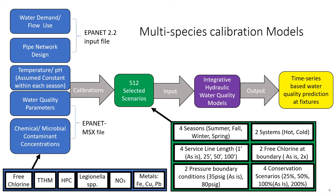For the multi-species calibration models, an EPA net 2.2 input file and an EPA net multi-species extension (EPA net MSX) file were created. Temperature and pH were assumed constant within each season, and each season was modeled separately. The water quality parameters and chemical and microbial contaminant concentrations were accounted for using the EPA net MSX file. Species modeled include free chlorine, TTHM, HPC, Legionella, NO3, and heavy metals including iron, copper, and lead.